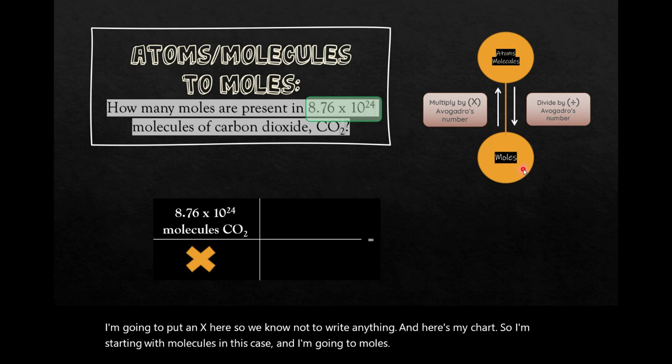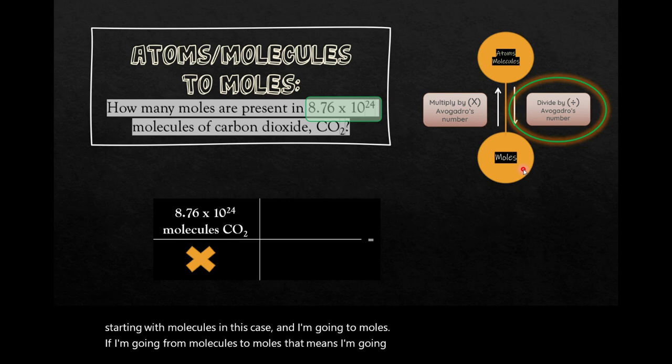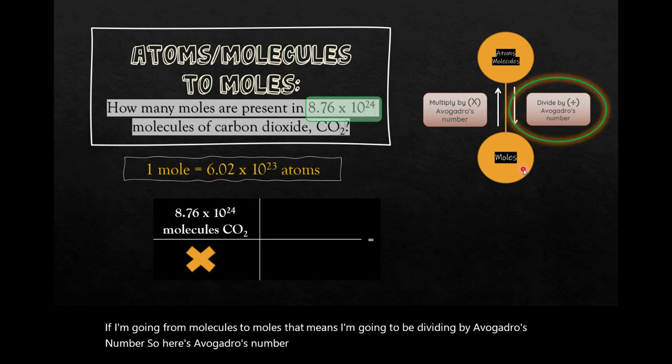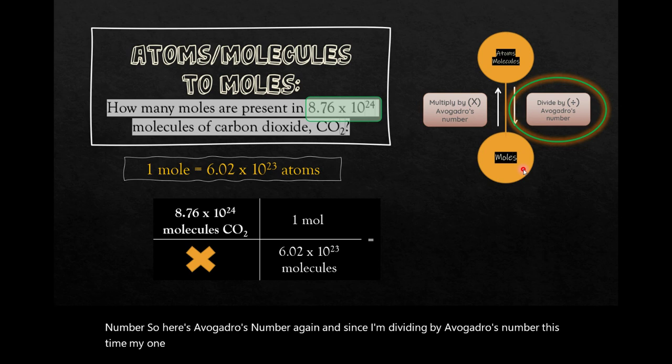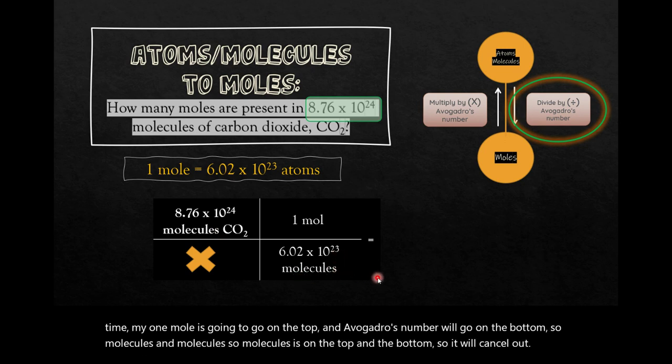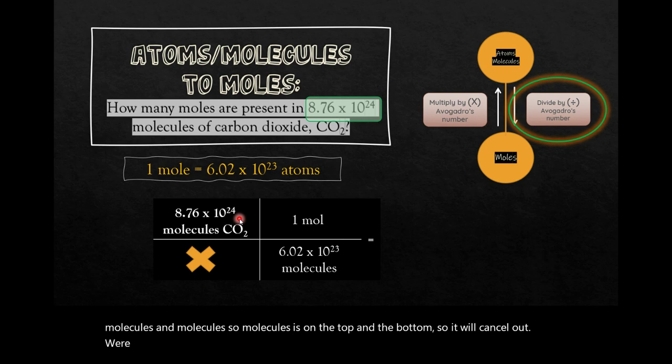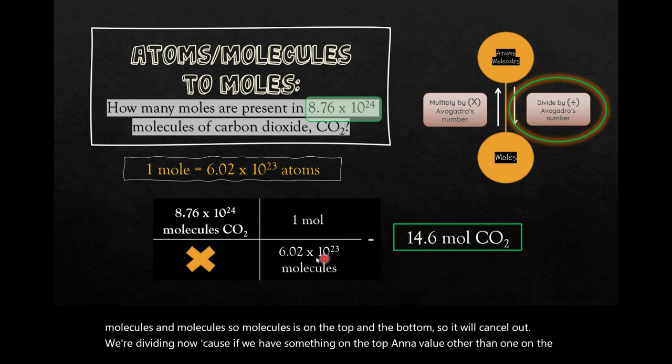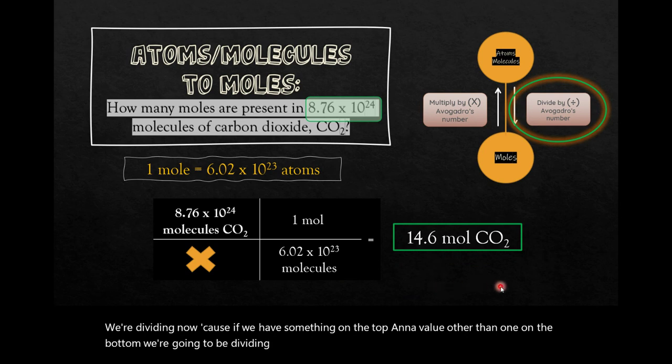If I'm going from molecules to moles, that means I'm going to be dividing by Avogadro's number. So here's Avogadro's number again. And since I'm dividing by Avogadro's number this time, my one mole is going to go on the top, and Avogadro's number will go on the bottom. So molecules and molecules. So molecules is on the top and the bottom, so it will cancel out. We're dividing now, because if we have something on the top and a value other than one on the bottom, we're going to be dividing. And we'll find 14.6 moles of CO2.